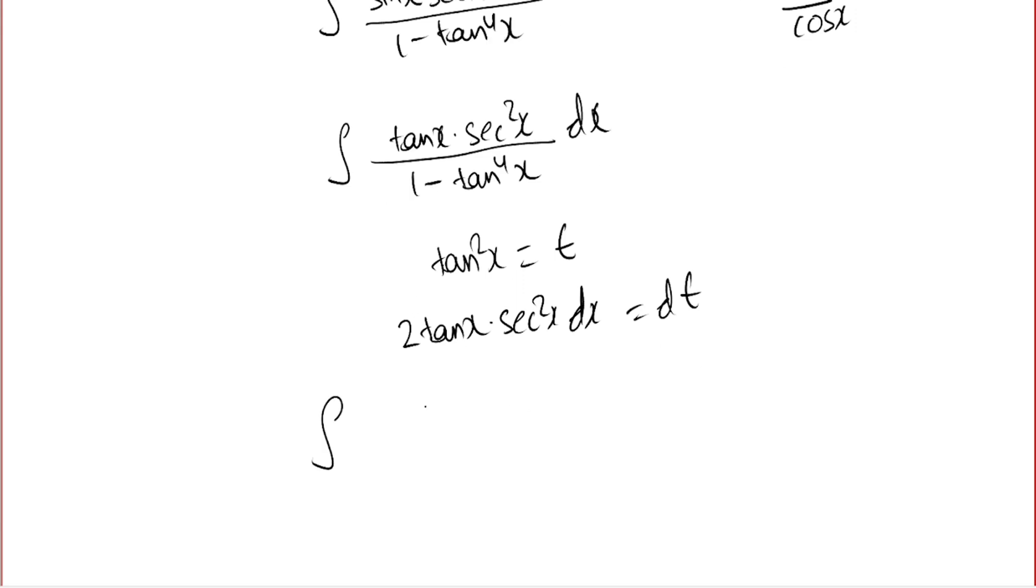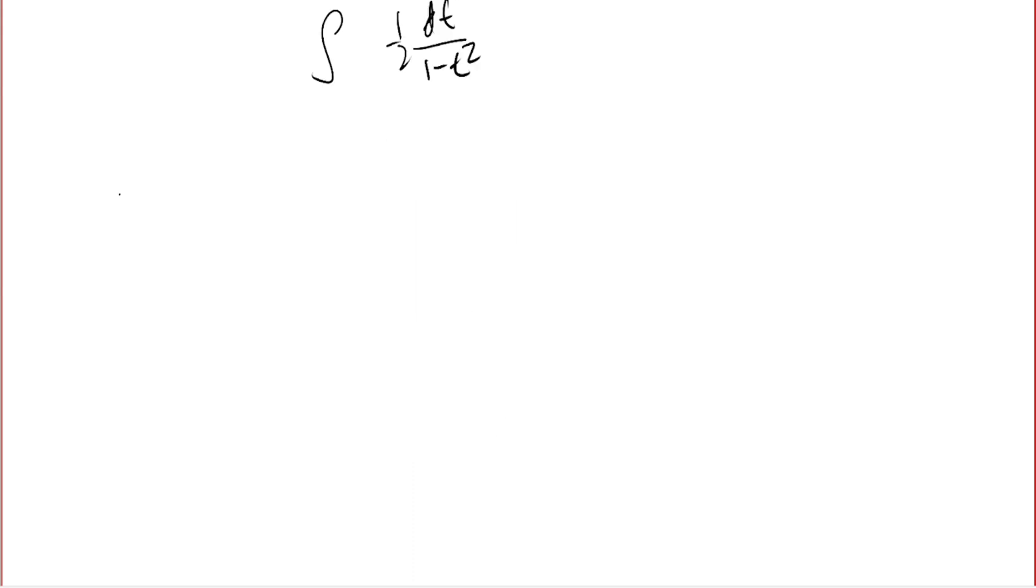Okay, so now I can write this as I equal to 1 over 2 integral 1 over 1 minus t into 1 plus t dt.